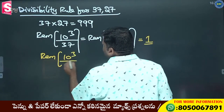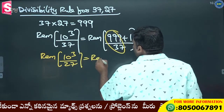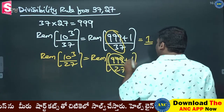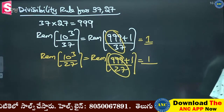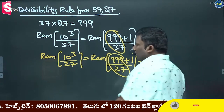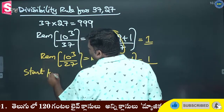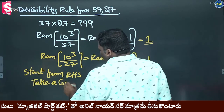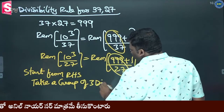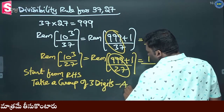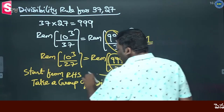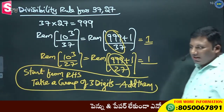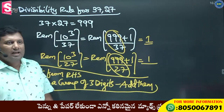10 cube divided by 27 — same logic. 10 cube is 1000, which is 999 plus 1. 1000 divided by 27: 999 is perfectly divisible, so remainder is 1. This is the same divisibility rule: start from right-hand side, take a group of three digits and add them. Divisibility rule for 37 and 27.